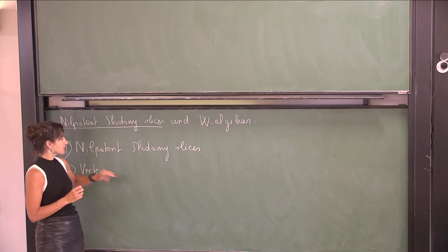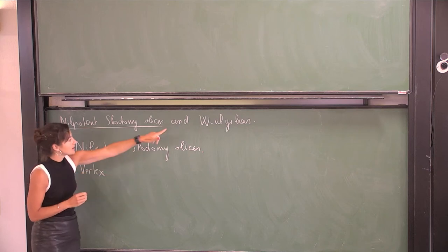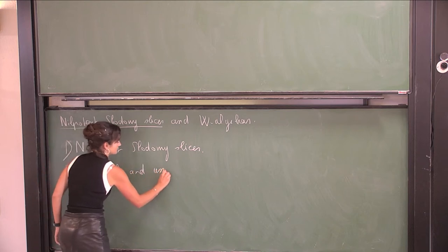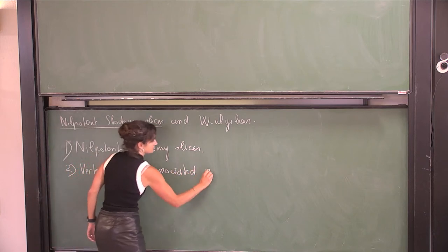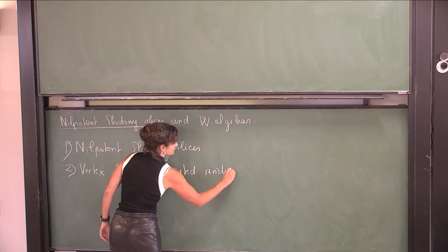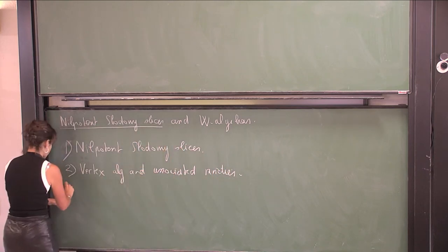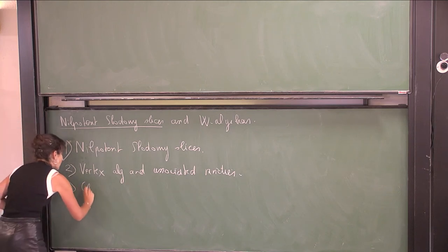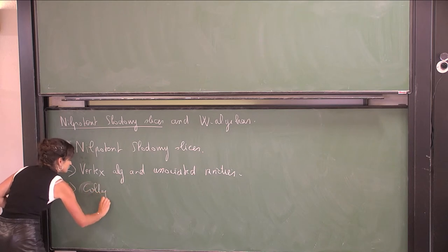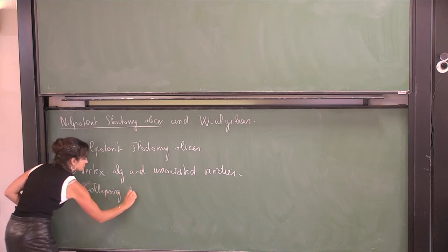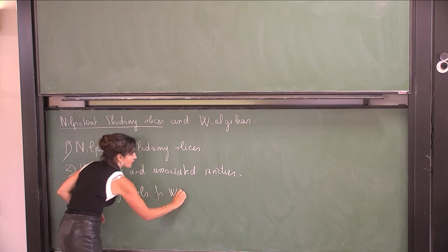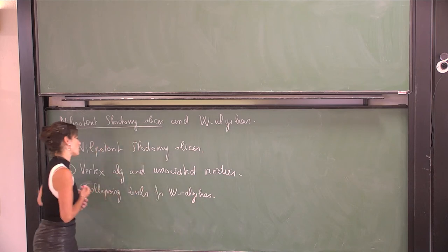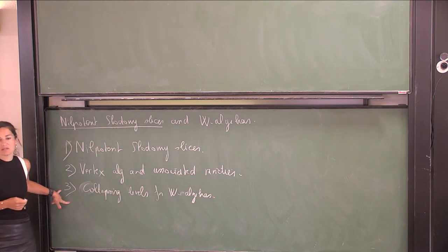They appear as associated varieties of W-algebras. Then I will talk about the problem I will be interested in. This last part will be a bit more advanced. I will talk about collapsing levels for W-algebras, and I will explain our results but also our motivations. This will probably be in the second talk.